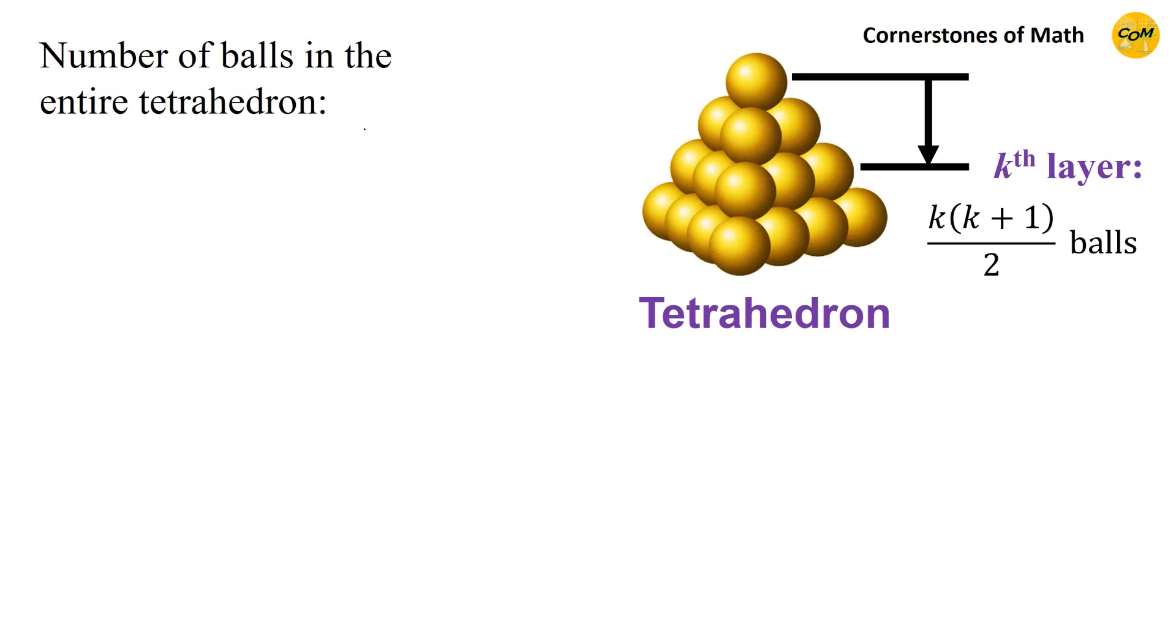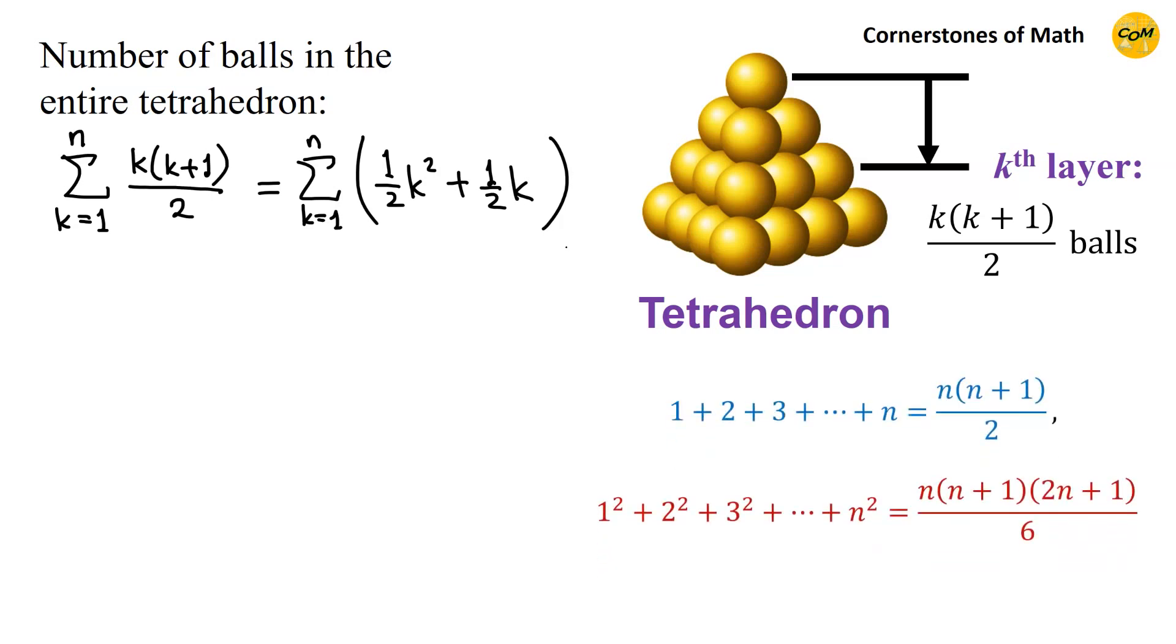And with this, we can calculate the number of balls in the entire tetrahedron. We have to keep at this term, where k changes from 1 to n. This can be written as sigma, 1 half k square plus 1 half k. And if we use the formulas for the sum of natural numbers and the sum of squares of natural numbers, we have first 1 half times sum of k squares, so n, n plus 1, 2n plus 1, divided by 6, plus 1 half times summation of k, so n, n plus 1, divided by 2.